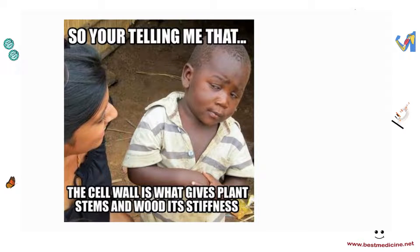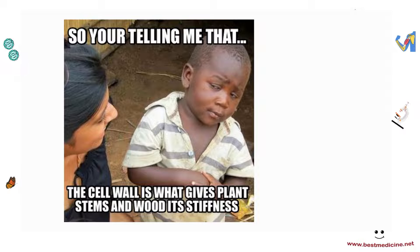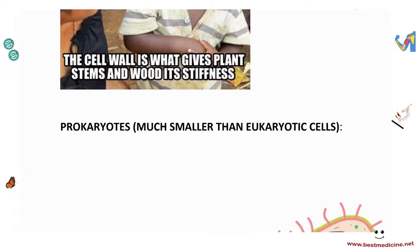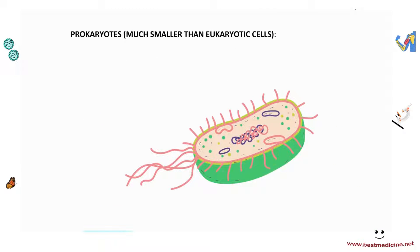The cell wall, because it is very rigid, also helps support the plant as a whole. Later we'll also study something called lignin, which is deposited in another part of the plant and helps support the wood and stems. But the cell wall is also a rigid component that gives plant stems and wood their stiffness.